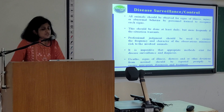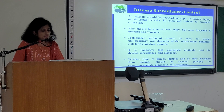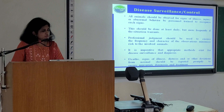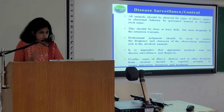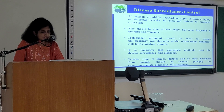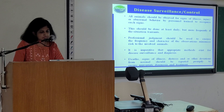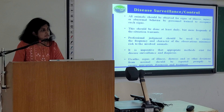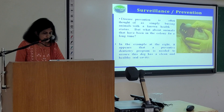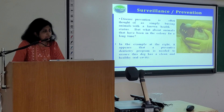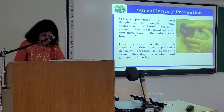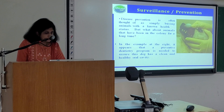For disease control, all animals should be observed for signs of illness, injury or abnormal behaviour by personnel trained to recognize such signs. This should be done at least daily, but more frequently if the situation warrants. Appropriate methods must exist for disease surveillance and diagnosis. Signs of illness, distress and other deviations from normal should be reported properly to ensure appropriate diagnosis and treatment. Disease prevention is often thought of simply as buying animals with a known health status, but animals that have been in the colony for a long time also require preventive care, such as preventive dentistry to ensure a clean and healthy oral cavity.